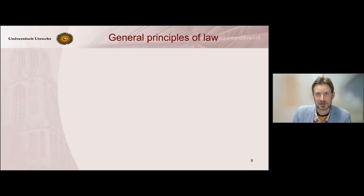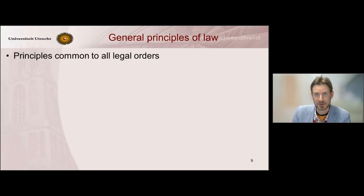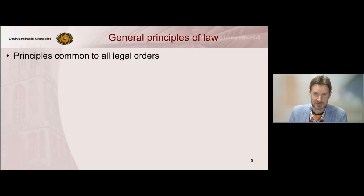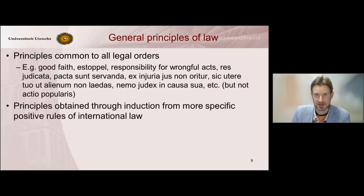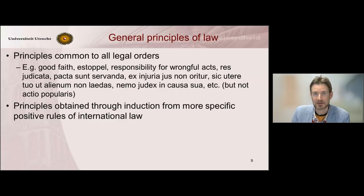A third source of international law is general principles of law. There are two kinds of such principles. We have general principles that are common to all legal orders, and those are mostly derived from domestic legal orders — principles without which no legal order can function, often transposed from domestic legal orders onto the international legal order. And then there are also principles that are unique to international law, often derived from more specific treaty rules or customary rules, identifying an underlying principle that unites or binds those specific rules.